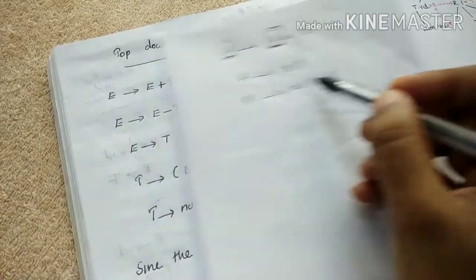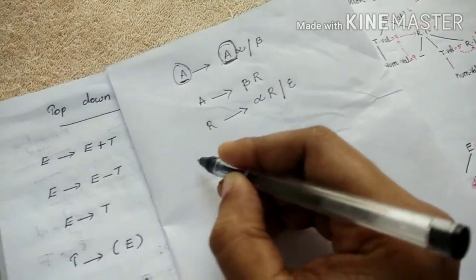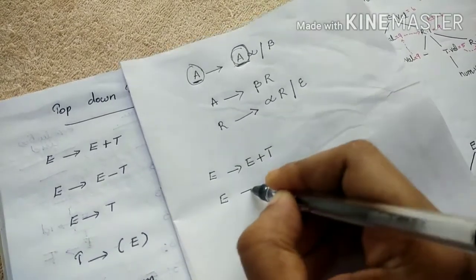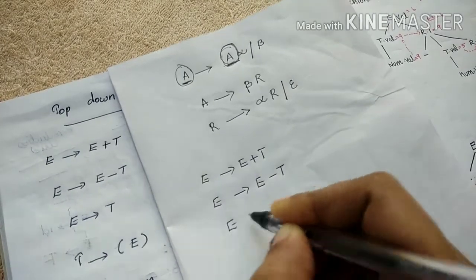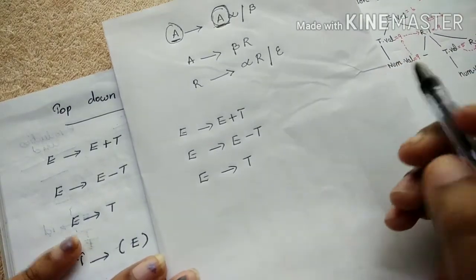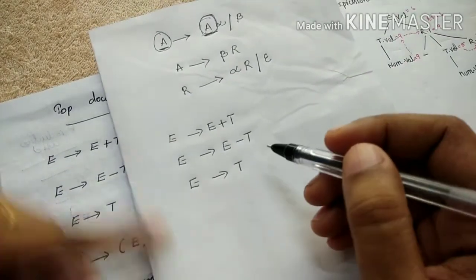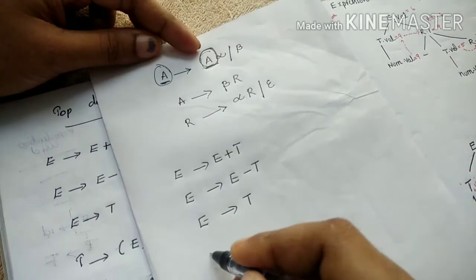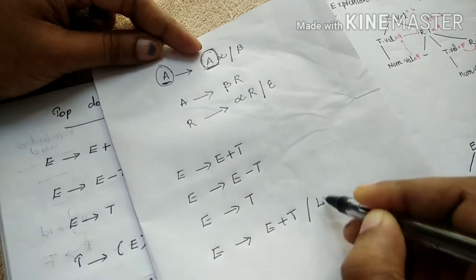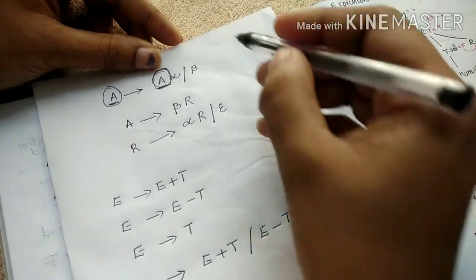So this is the example. I will remove the left recursion. The original productions are: E plus T, E minus T, E equals T. After removing left recursion, E becomes: E-bar equals E plus T-bar, E minus T-bar, or E. This is the format.